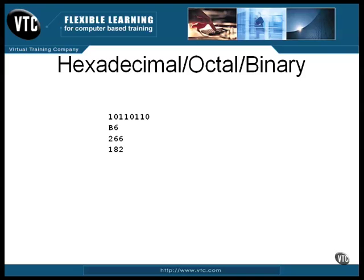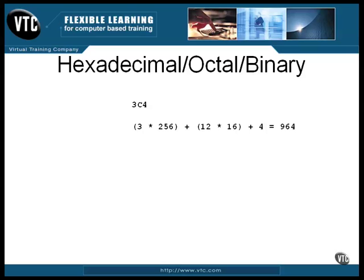The problem comes up from time to time that you need to convert a number from one base to another. It doesn't happen often, but it does happen. There are two approaches you can take. Let me convert a number from hex to base ten. This is the hexadecimal value 3C4. In base ten, each digit represents a power of ten, and in base sixteen, each digit represents a power of sixteen. So it can be converted with this expression. The value of 256 is 16 squared, and the value of C is 12.